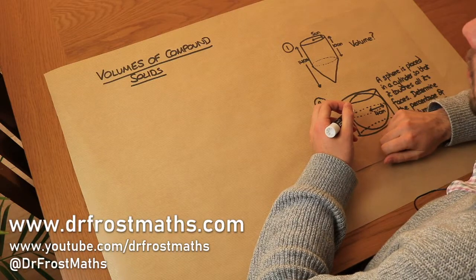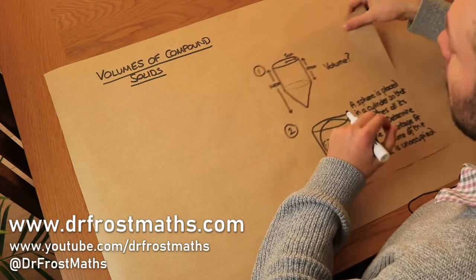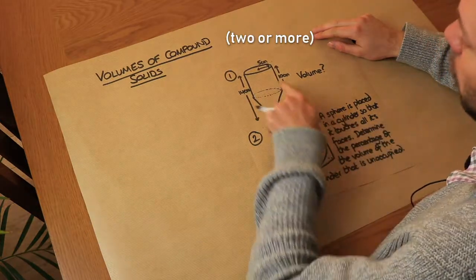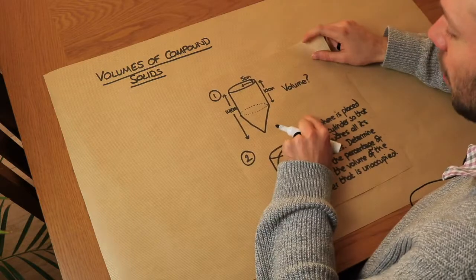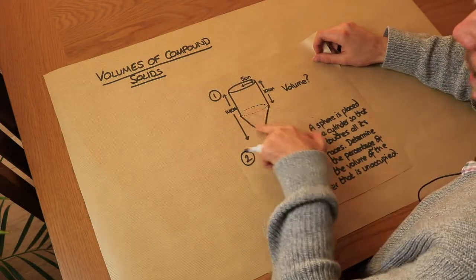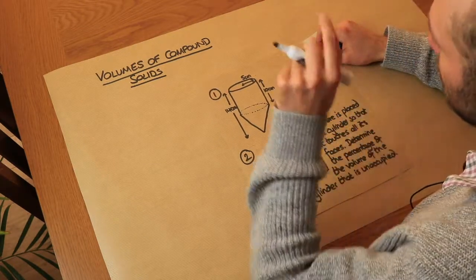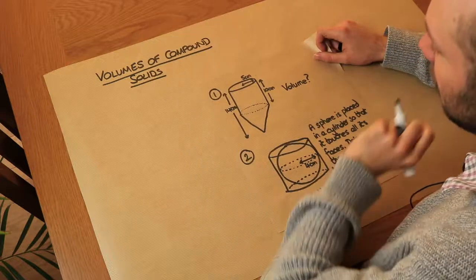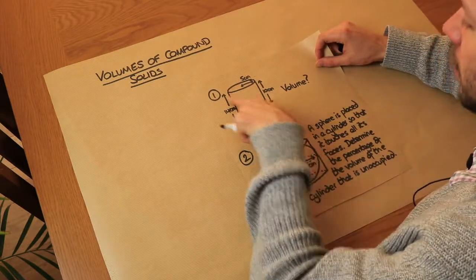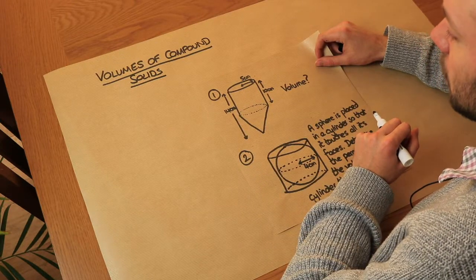Hello and welcome to this video on volumes of compound solids. By a compound solid I just mean a solid which is composed of two different common types of solids. Just like with compound 2D shapes where we find the area of each different piece, we just need to find the volume of each of the different solids and add them together to give the total volume.